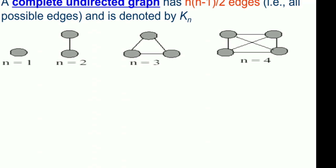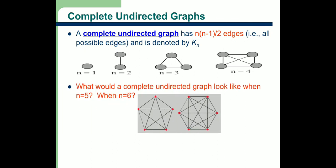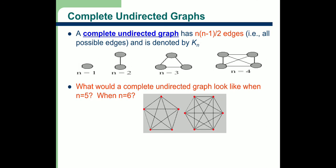When n=4, every vertex is connected to all remaining vertices. For n=5 and n=6, a pentagon and hexagon respectively are drawn where every vertex is connected to all others except itself. This type of graph is known as a complete graph, and in a complete graph the total number of edges is always n(n-1)/2.